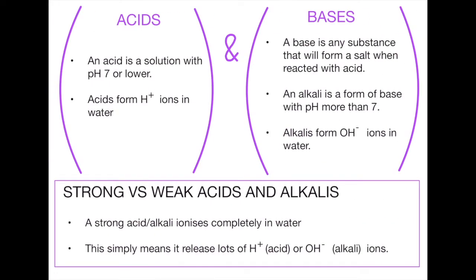Next we have acids and bases. An acid is a solution with a pH of 7 or lower, and importantly acids form H+ ions in water when they dissolve. Bases are any substance that will form a salt when reacted with an acid. It's a very common mistake that people think an alkali and a base are exactly the same thing. An alkali is a form of base with a pH more than 7, and alkalis form OH- ions in water.